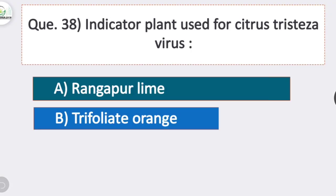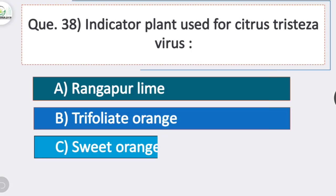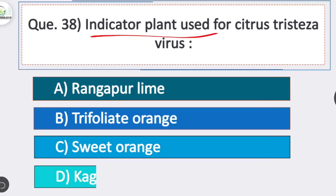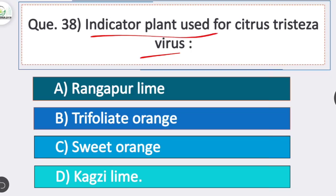Question 38: the indicator plant used for citrus tristeza virus is? Option D is correct — Mexican lime. The indicator plant Mexican lime is used for citrus tristeza virus.